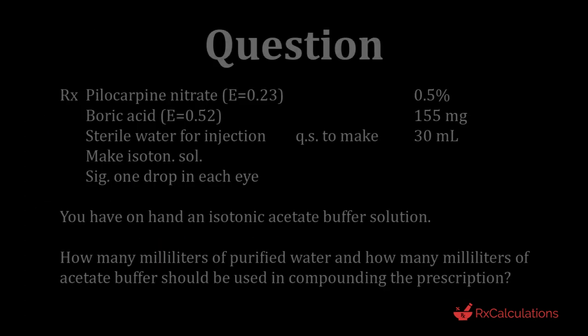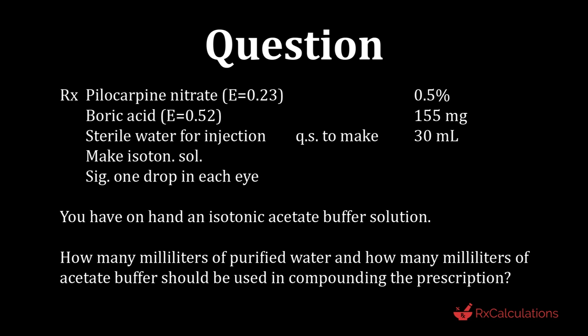Now let's look at a question with more than one ingredient. You have pilocarpine nitrate with an E value of 0.23 at 0.5% concentration, and boric acid with an E value of 0.52 at 155 milligrams, in a 30 mL preparation. You are making an isotonic solution with directions of one drop in each eye. You have on hand an isotonic acetate buffer solution. How many milliliters of purified water and how many milliliters of acetate buffer should be used in compounding the preparation?